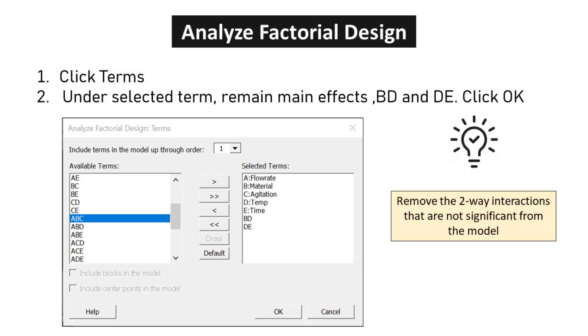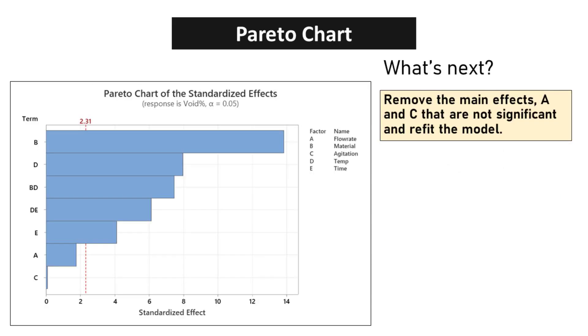Click Terms. Under Selected Term, remain main effects, BD and DE. Click OK. Remove the main effects A and C that are not significant and refit the model.